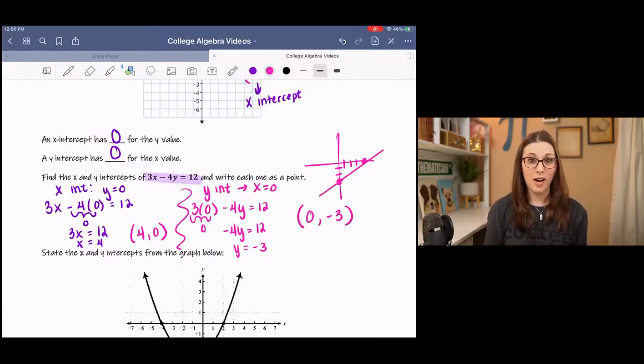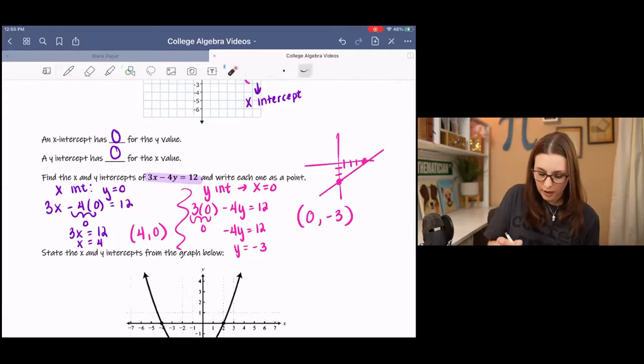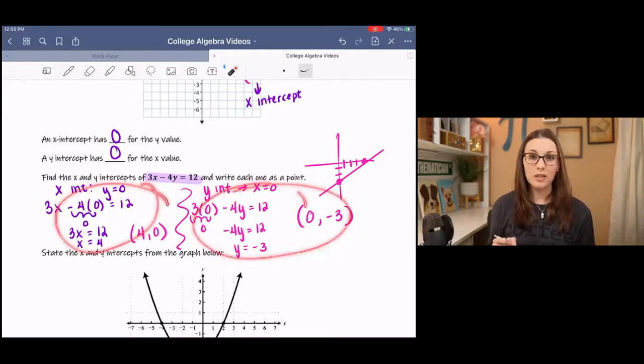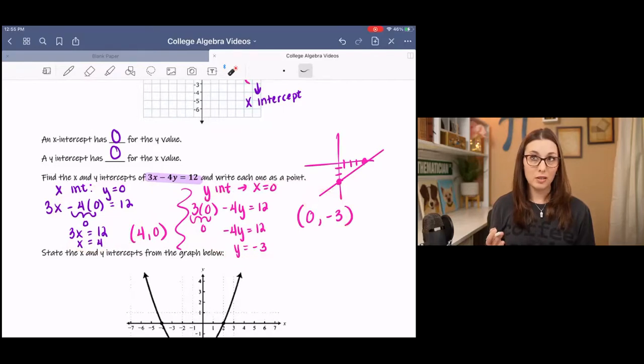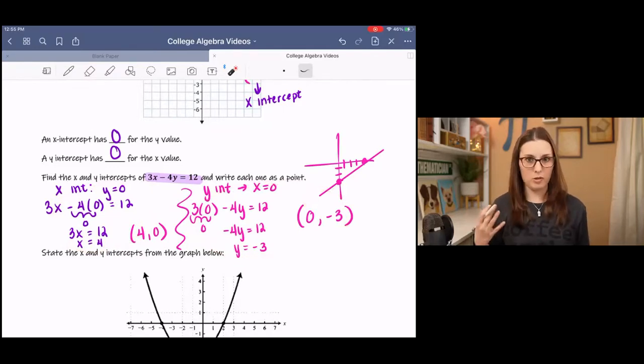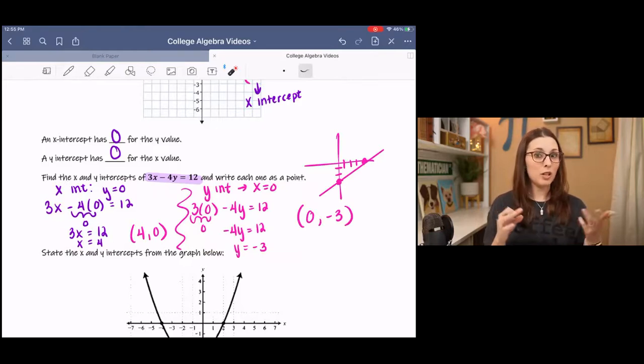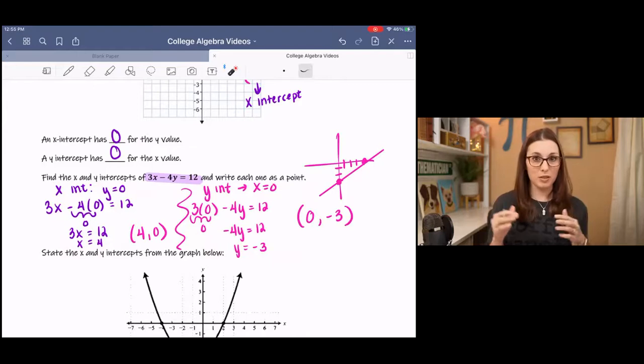And that's a graph of the line. So if you were given an equation like this, and you were asked to graph it, then you could graph it by finding the two points. Two of the points. There's an infinite amount of points on a line, but those are two of them. And you really only need two to graph a line. You either need the slope and an intercept, the slope and a point, two points, intercepts, anything like that, where you have two pieces of information, you can graph a line.